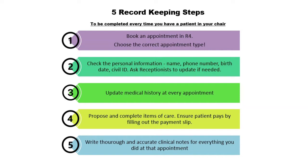The fourth record-keeping step is to propose and complete items of care. Each time you see a patient, you need to complete a treatment code in R4, and the patient needs to pay. You can ensure that this happens by filling out the payment slip, and we'll talk more about that later. The fifth record-keeping step is to write thorough and accurate clinical notes for everything you did at that appointment.